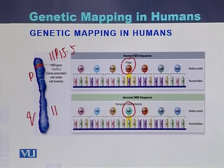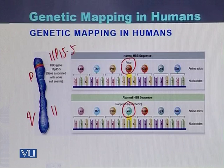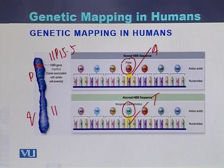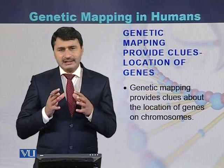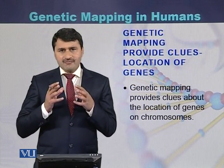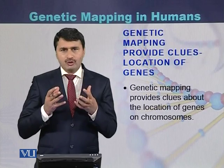Due to this amino acid change, in the normal sequence there is adenine, while in affected individuals there is thymine in place of adenine — adenine is replaced by thymine. The individuals with this change develop a disease called sickle cell anemia. Genetic mapping is a method that provides clues about where genes are located on the chromosomes.